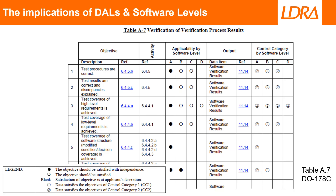This table shows software levels, for which software level is synonymous with DAL. The tables in DO-178C summarise the content of the body of the text, and this example makes clear the impact of the different levels on verification overhead. Level A demands that all objectives are fulfilled with independence. Conversely, level D requires very few to be fulfilled at all. This principle carries throughout the whole of the process.